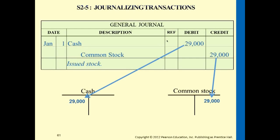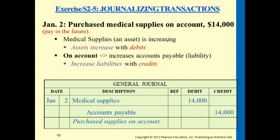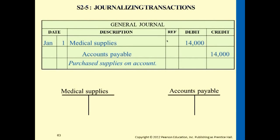For medical supplies and accounts payable — one is an asset account, one is a liability account. This was an entry we did earlier. To represent it in T-account form in the ledger, open up two accounts: the debit goes to the debit side of the asset account, and the credit goes to the liability account, since liability increases on the credit side. We purchased supplies and haven't paid cash yet.